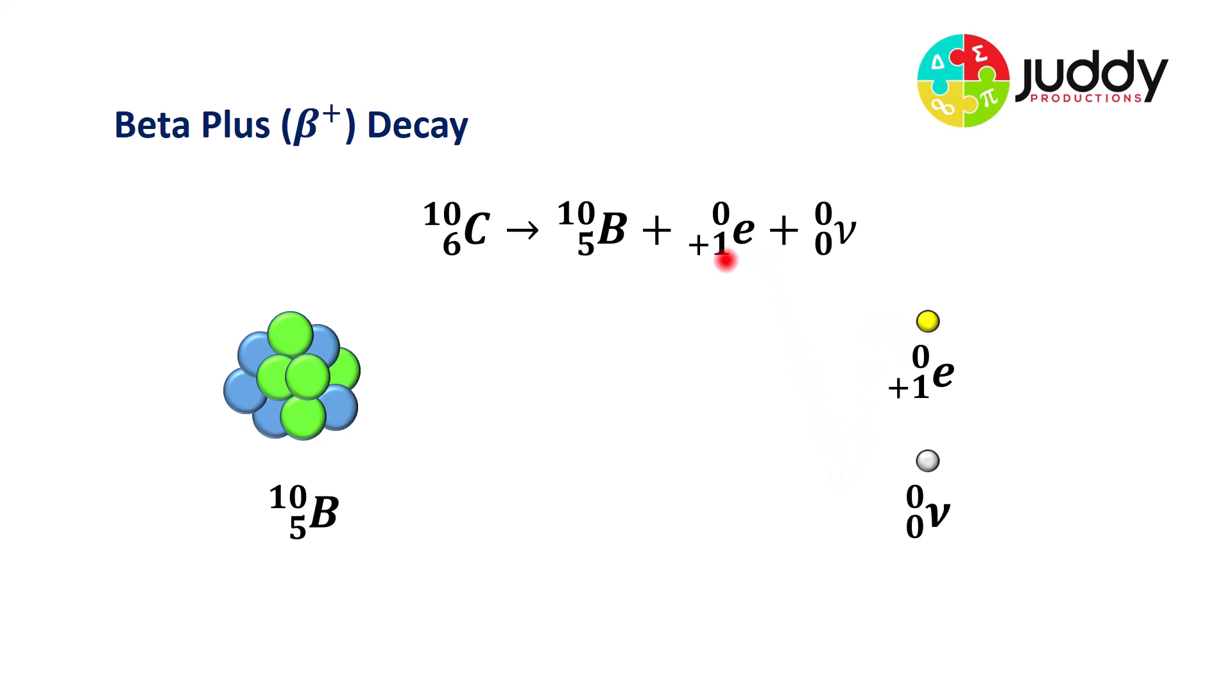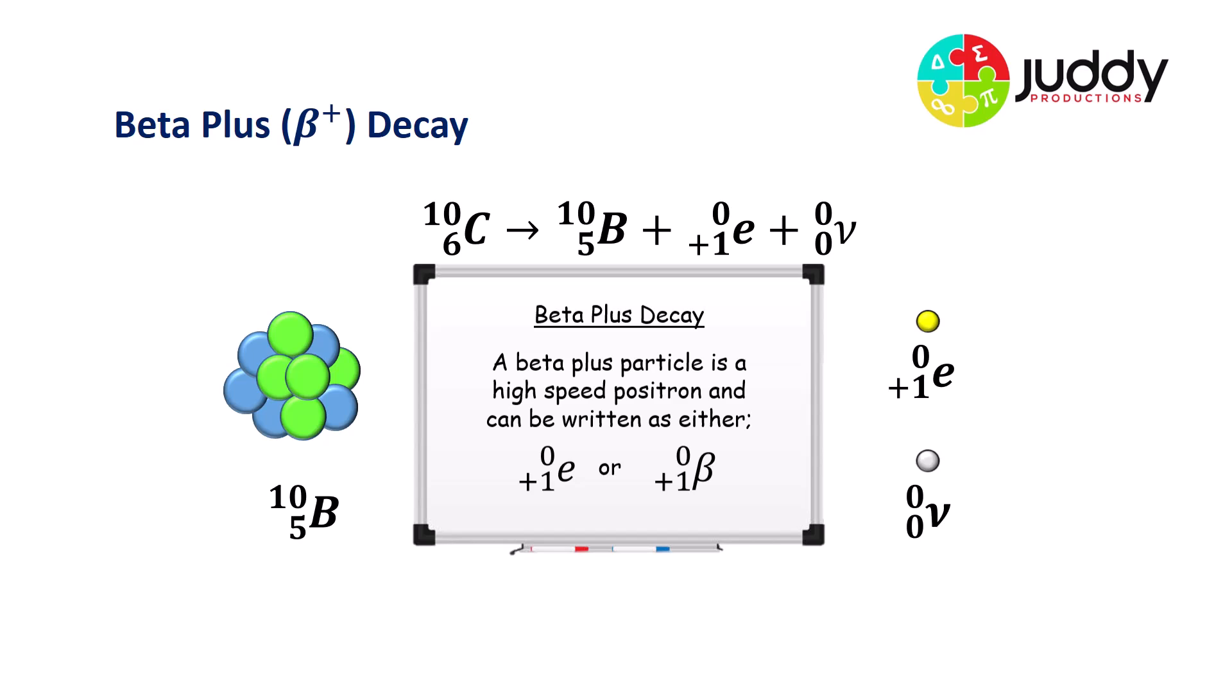Number one is a zero plus one E, which is a positron. And the second one is a zero zero with a little italics V, and this represents a neutrino. A beta plus particle is a high-speed positron. And it can be written as either zero plus one E, or zero plus one with the beta symbol from the Greek alphabet. Now a positron, if you like, is an anti-electron. It's an anti-particle, or an anti-matter counterpart of the electron. It has the same spin, it has the same mass, it has the same magnitude of charge, only it's positively charged.